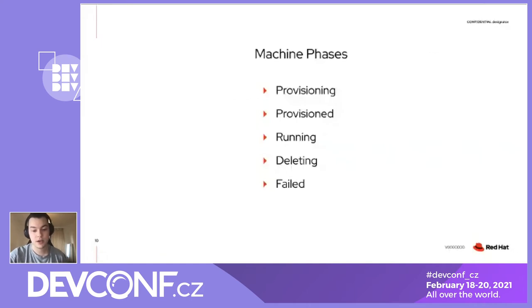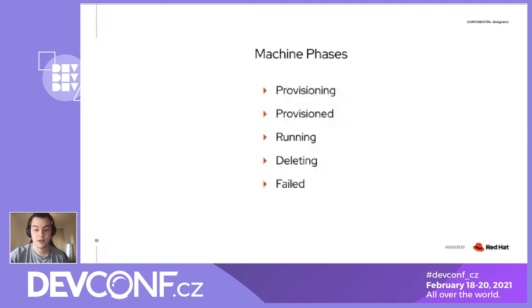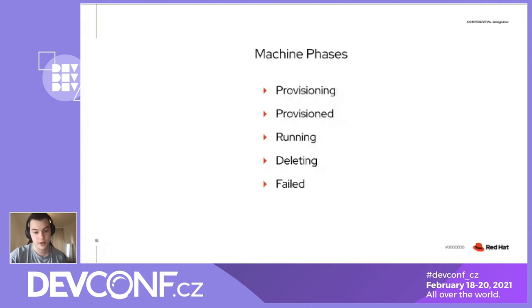There are five phases in total. These phases are: provisioning, provisioned, running, deleting, and failed. I will describe what they mean in the next couple of slides.